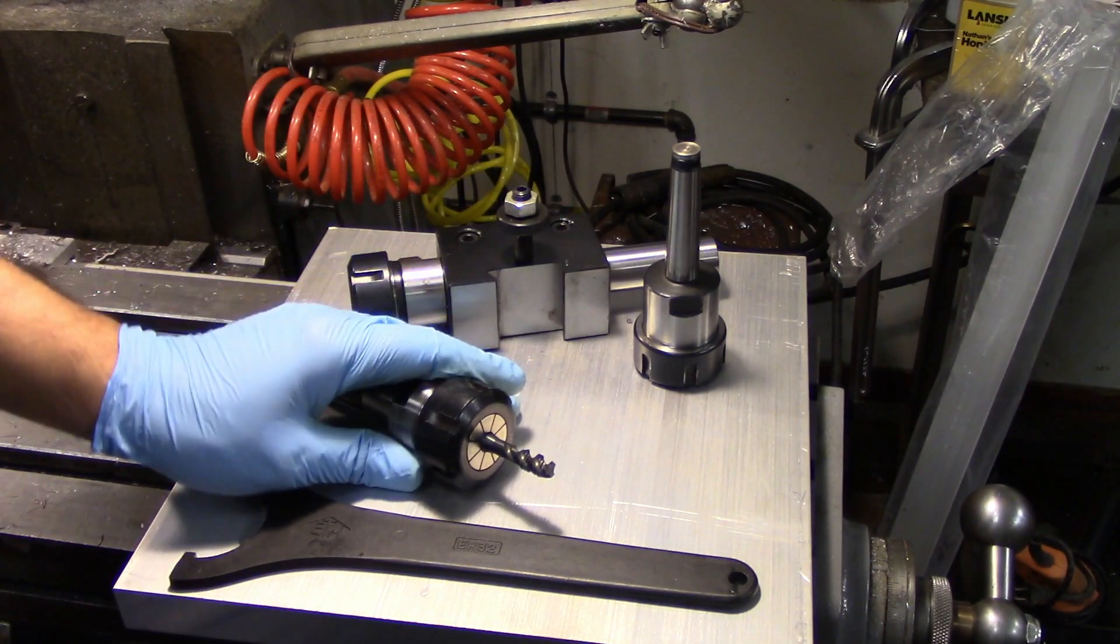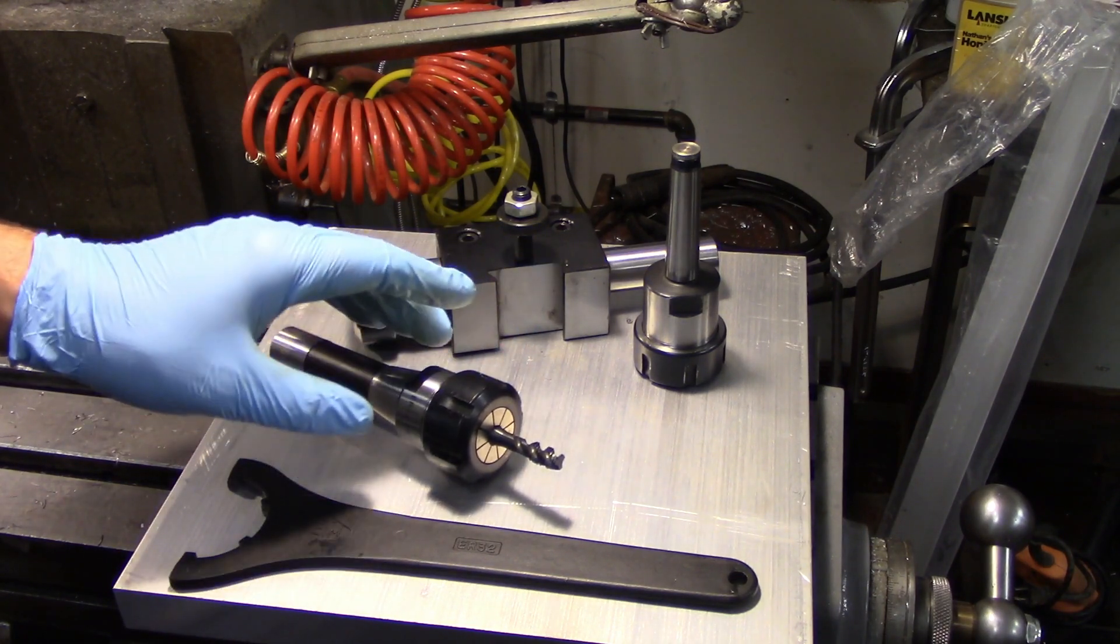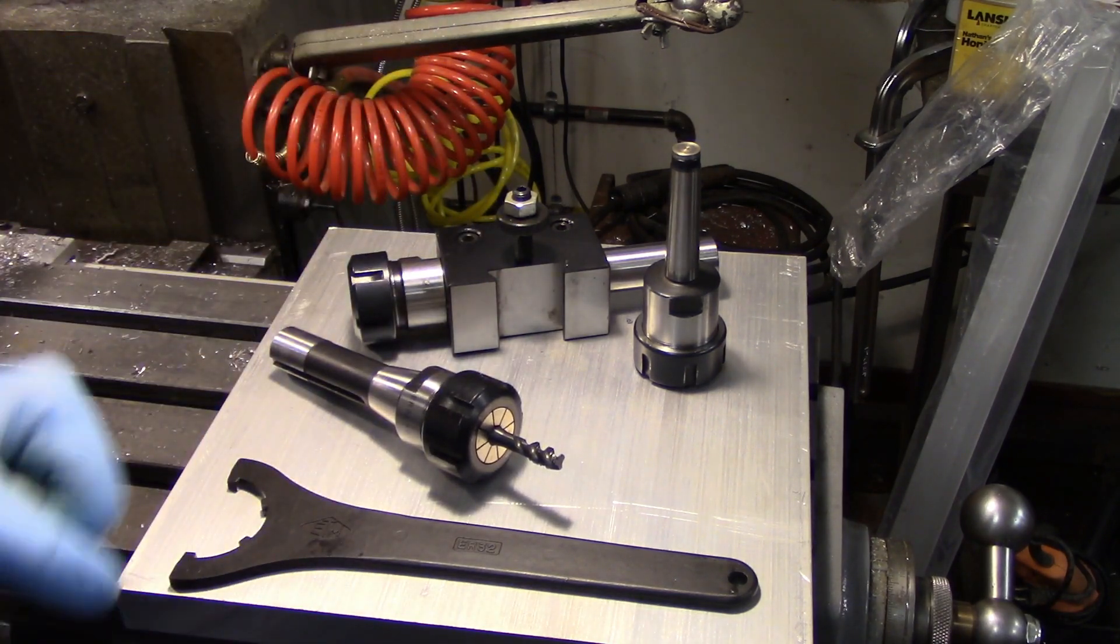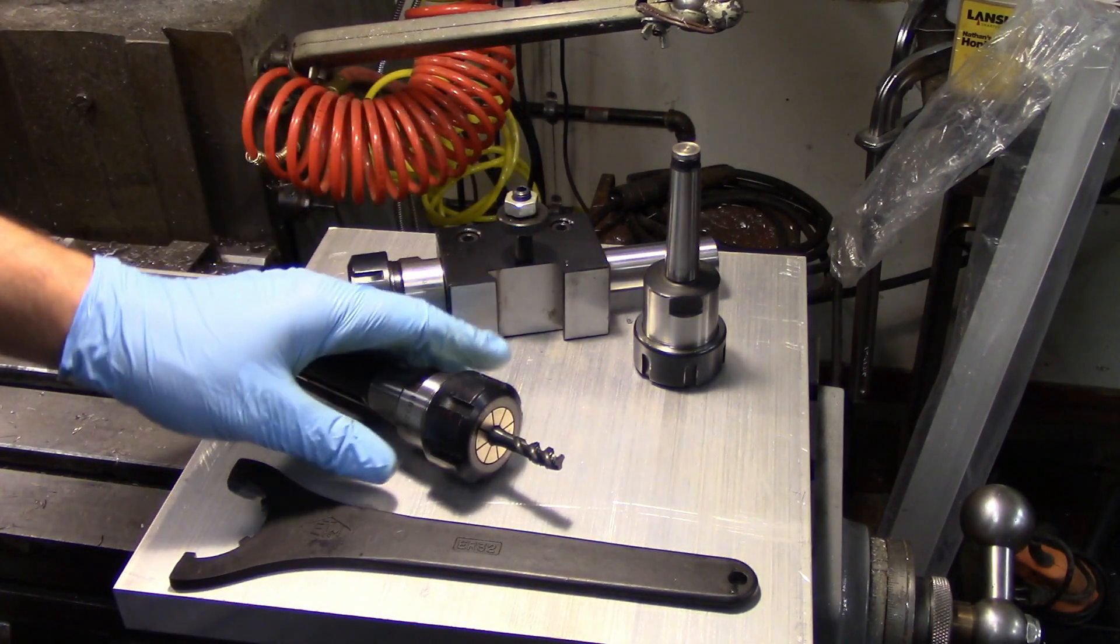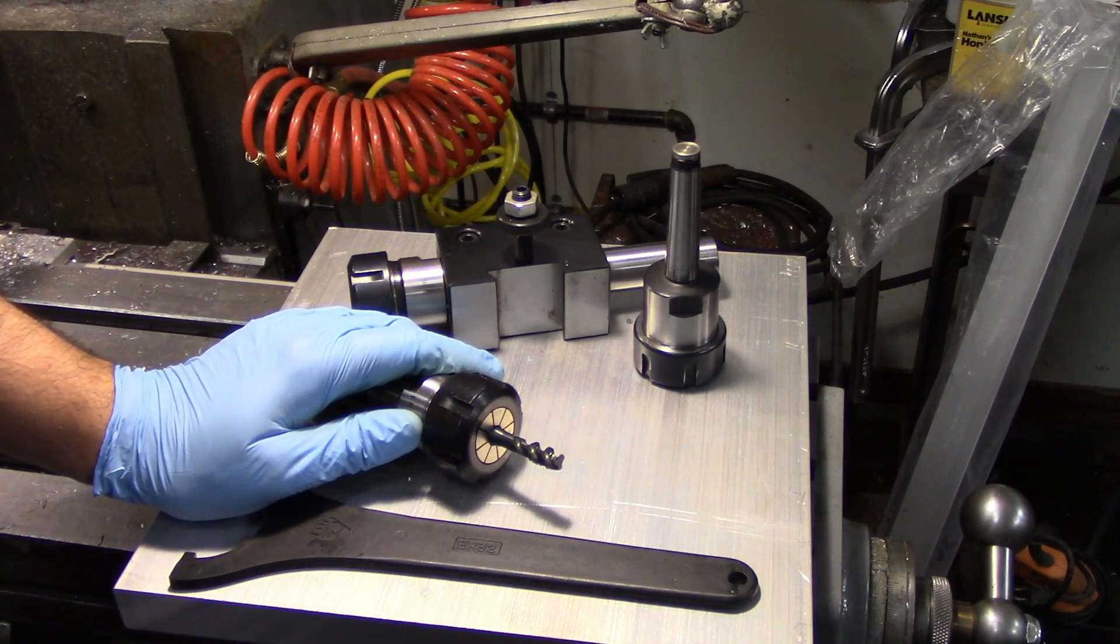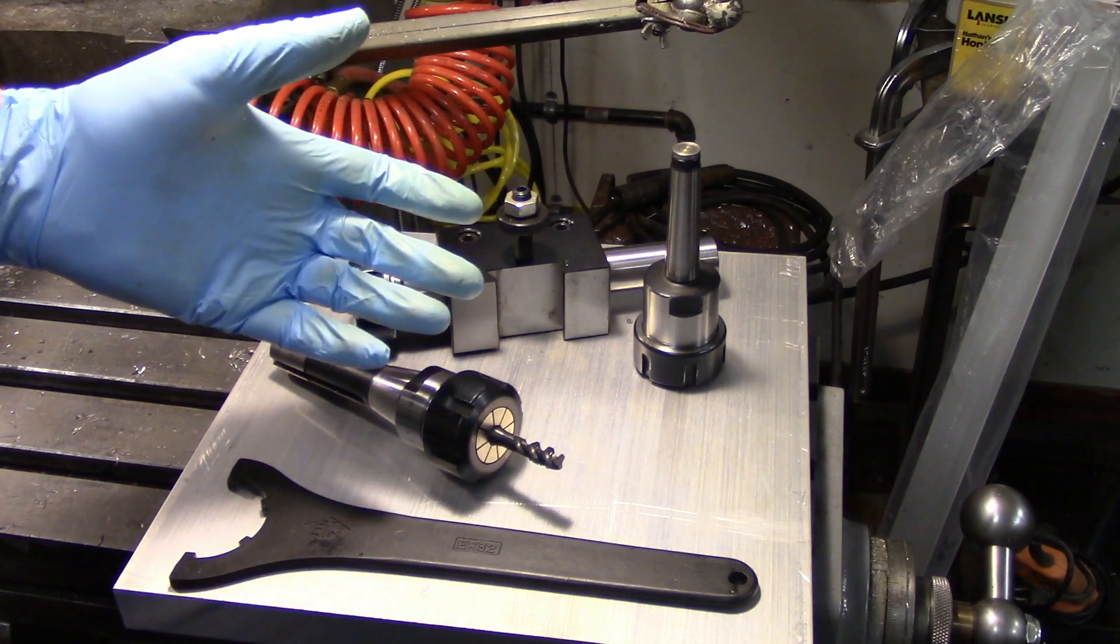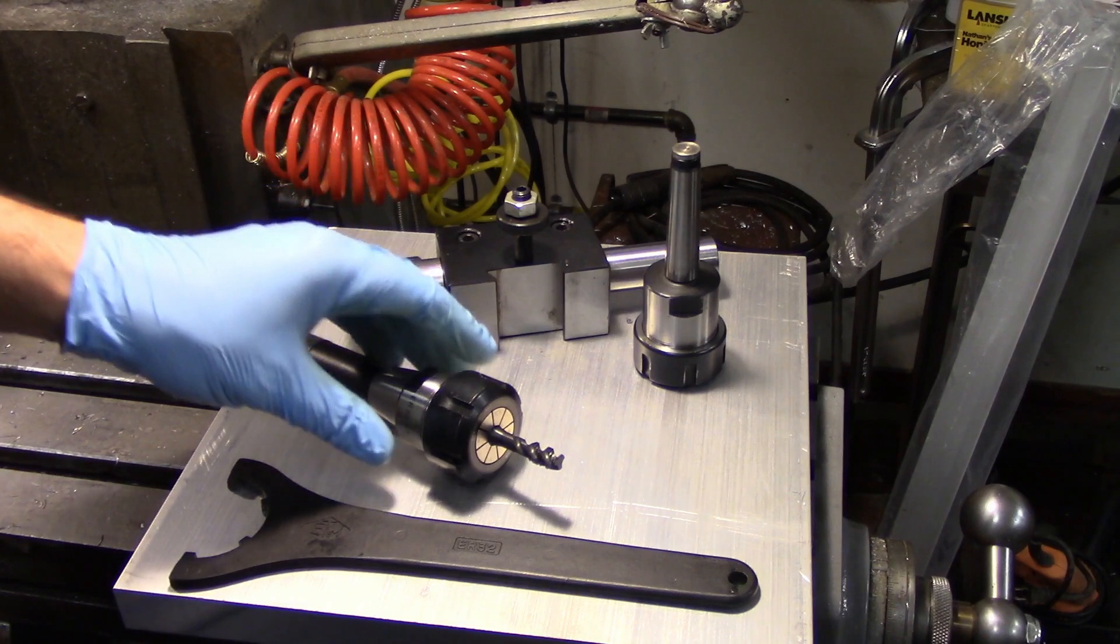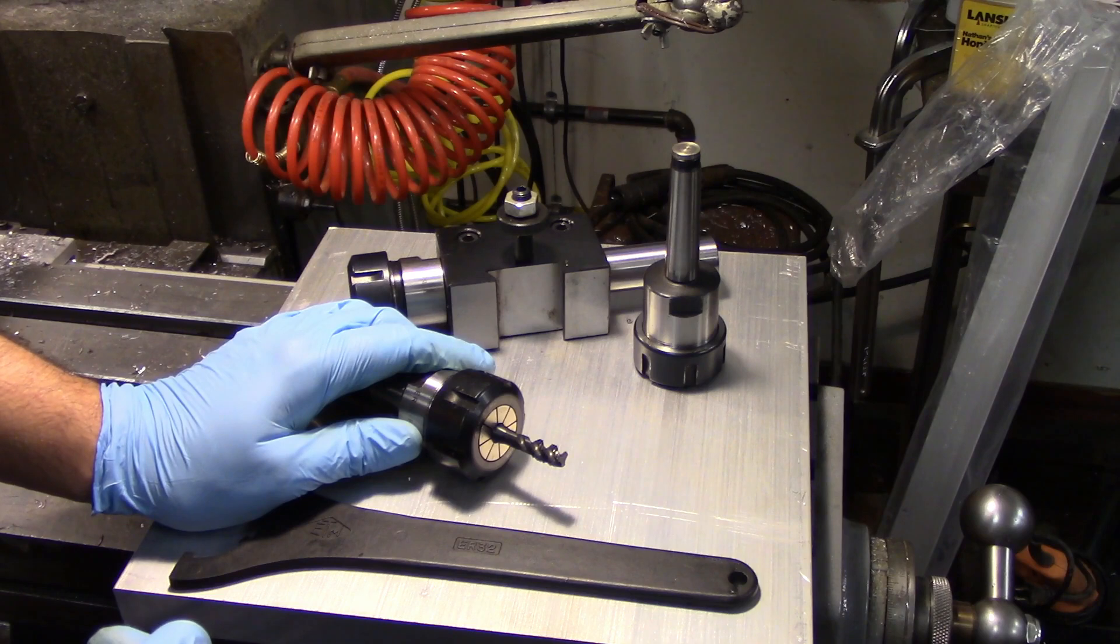When I first bought my ER collet chuck, I went with ER32 and I've stuck with that. The reason I went with it is because it did up to three quarters and that was pretty much all I was doing. I bought it for my lathe because the three jaw chuck was so incredibly horrible that I pretty much exclusively used my four jaw. I wanted to get into using collets because they're faster and they're more accurate, and especially if I was using a four jaw chuck, I didn't want to have to sit there and dial a part in every single time.